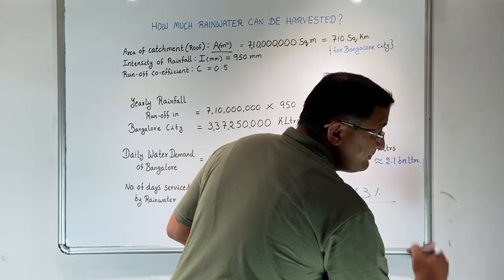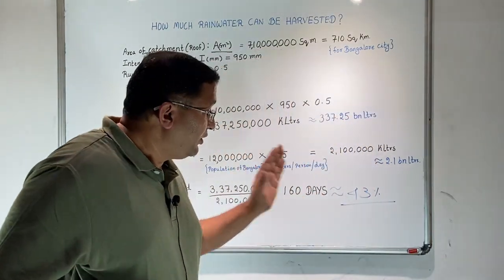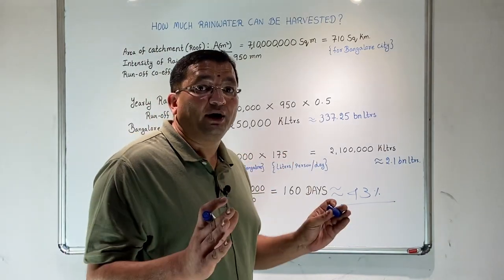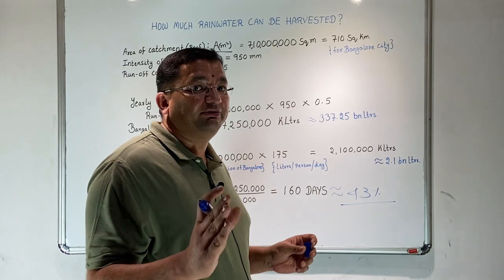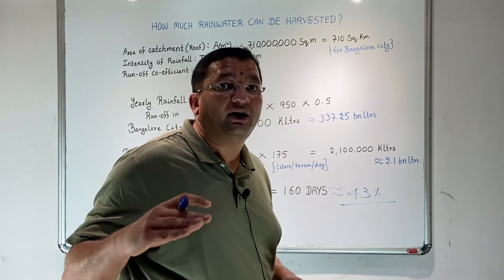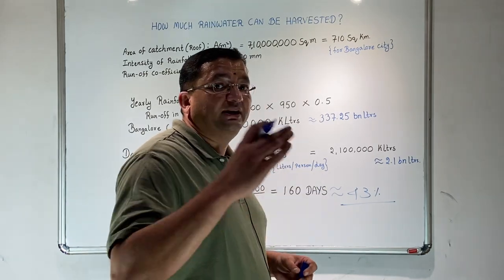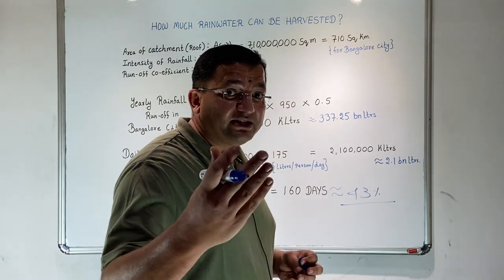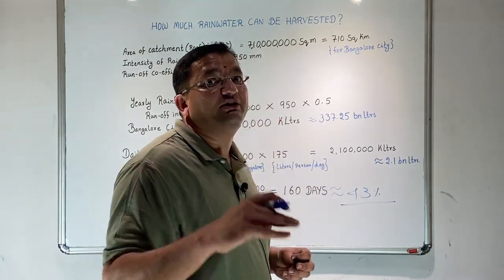About 43 percent of the water demand of Bangalore can be met by rainwater falling on the city. We can see in this graph how demand for water and rainwater supply correlate, and in a couple of months we have more water than we actually need.